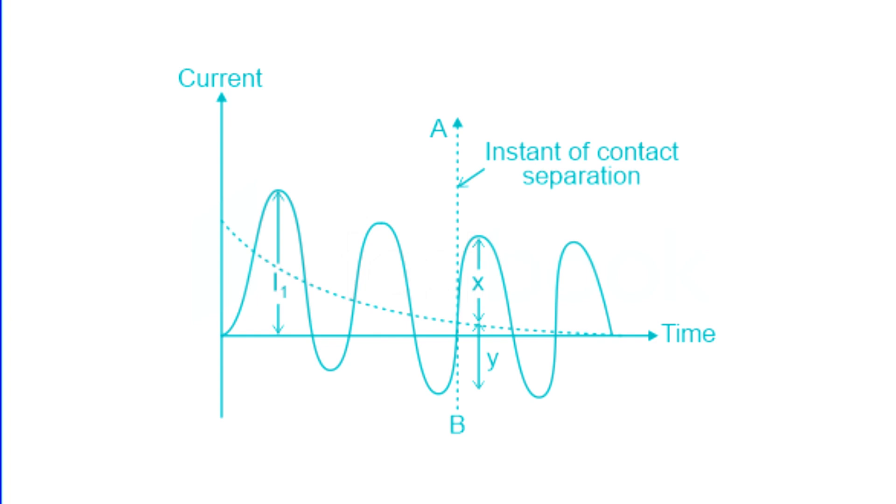Consequently, the making current must be higher than the breaking current. If the symmetrical breaking current is known, the making current can be determined. Let the symmetrical breaking current be I, then the peak value of the symmetrical breaking current will be root 2 times I.